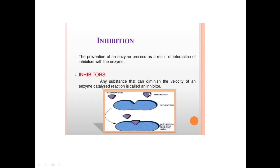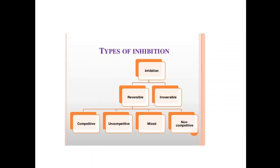This is the substrate and this is the inhibitor. The substrate binds to the enzyme, but the inhibitor also binds to it and blocks the active site, so the substrate cannot bind to that site and the reaction cannot further proceed.